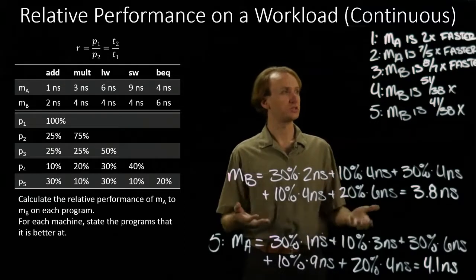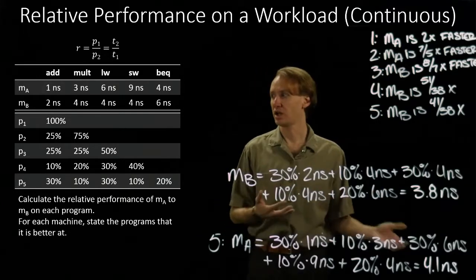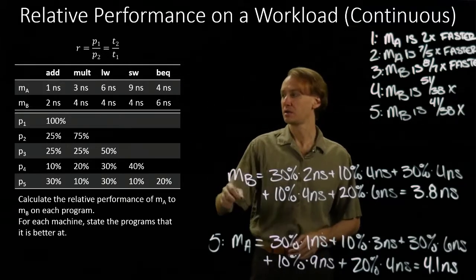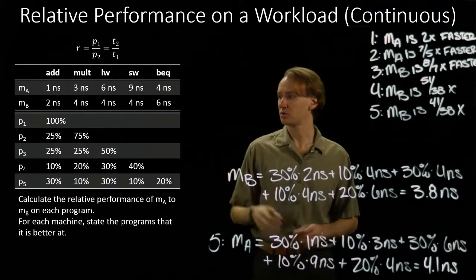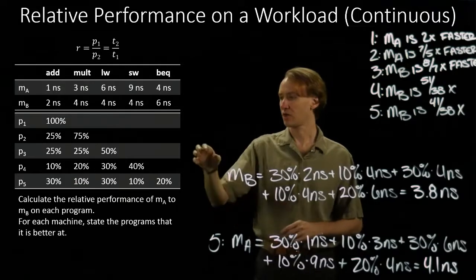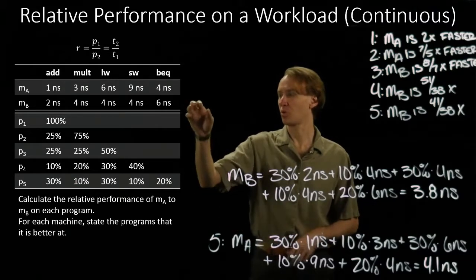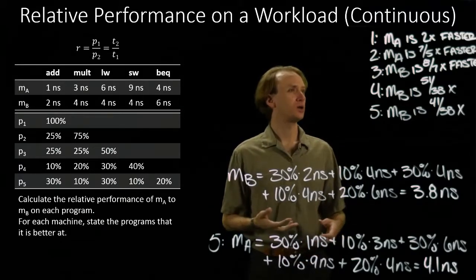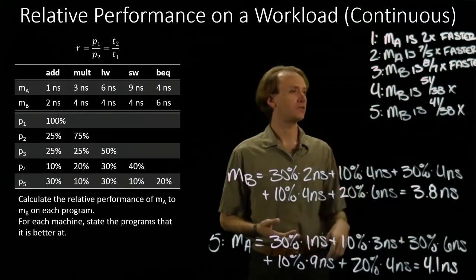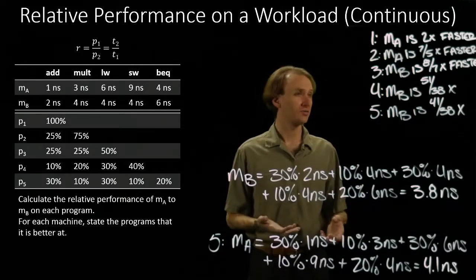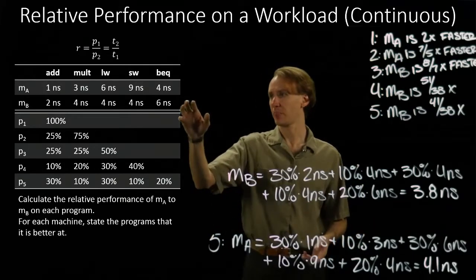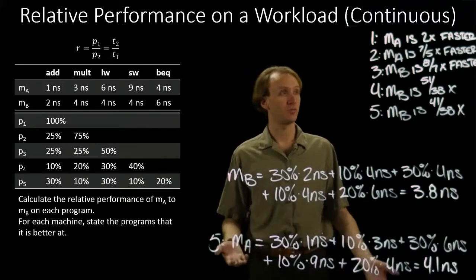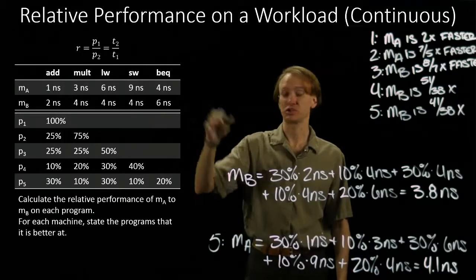We can use this information to decide which machine to run each task on. Programs 1 and 2 should run on machine A. Programs 3, 4, and 5 should run on machine B. However, some of these are pretty close — programs 3 and 5 aren't too different. If machine B is already busy with lots of program 4 tasks, it may make sense to run those on machine A anyway.